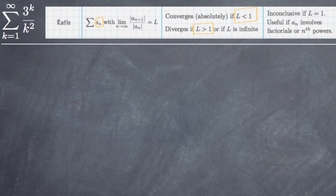So let's take a look at what this looks like. In this case, we have the sum of 3 to the k divided by k squared from k equals 1 to infinity. So what we want to do, like we mentioned before, is plug in k plus 1 every time we see the variable k.